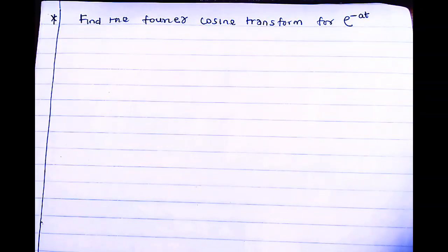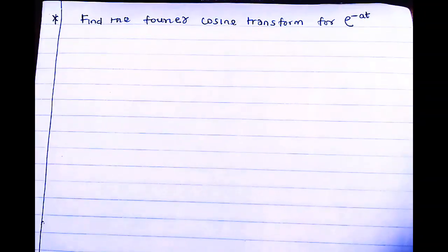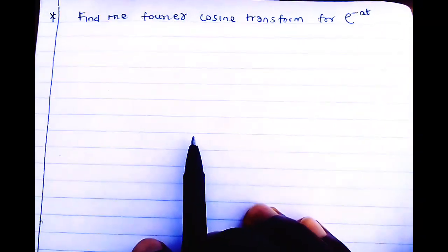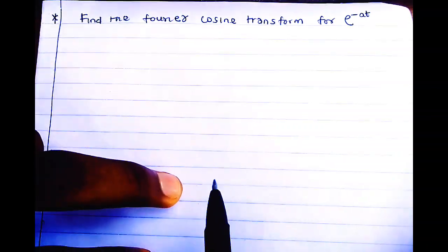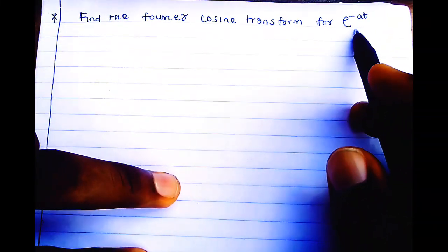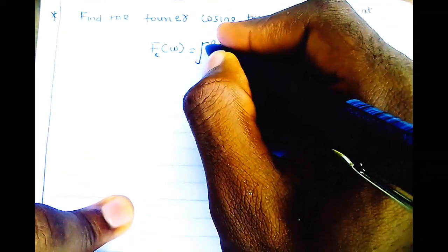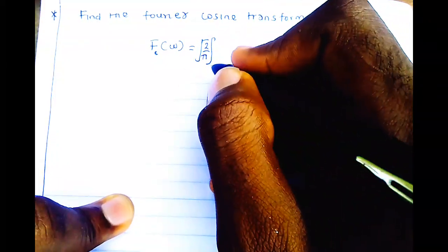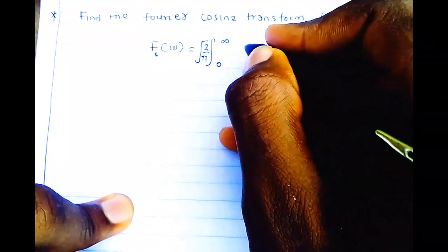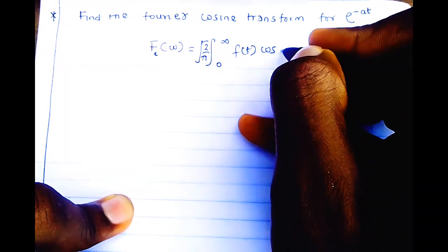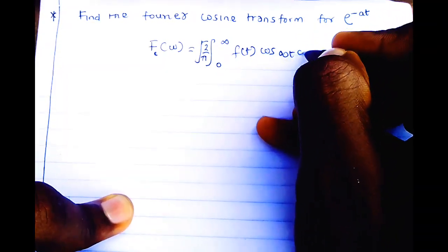The question asks us to find the Fourier cosine transform of e^(-at). As I said in our last video, the formula for finding the Fourier cosine transform of a function f(t) is denoted as F_c(ω), and it equals the square root of two over π, times the integral from zero to infinity of f(t) cos(ωt) dt.